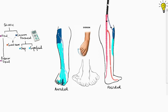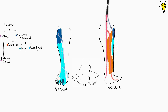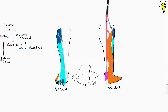Let's see the dermatomes on the posterior side now. The sural nerve area is highlighted in brown. As already discussed, it is only sensory in nature — it covers the posterior lateral area all the way down till the lateral-most toe. The posterior tibial nerve covers the area on the posterior medial part around the ankle, and running down, its branches cover the sole of the foot.